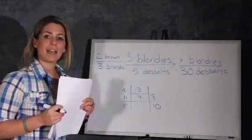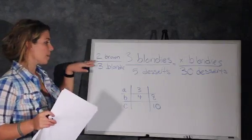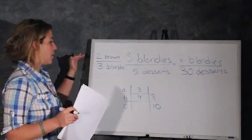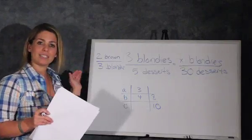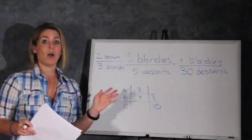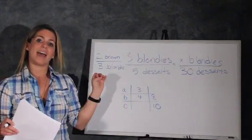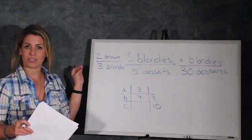So if we think back to that original ratio that we have, it doesn't mention dessert anywhere. It just talks about brownies and blondies. So we have to do one step before we can actually get to our ratio problem,